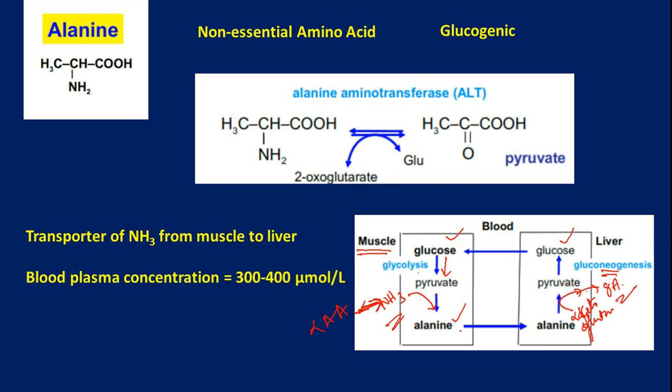In blood plasma, as much as 300 to 400 micromoles per liter of alanine will be present, because alanine is one of the major transporters for ammonia in our system. It is a substrate for gluconeogenesis, helping in the biosynthesis of glucose in the liver.